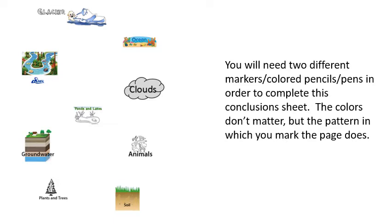In order to summarize the information presented and make it neater and cleaner, you're going to need two different colored pencils, markers, or pens. The colors don't matter so much, but the pattern in which you mark the pages does. As I go through the presentation using different colors for different pathways, you need to follow the same pattern. I'm using orange and purple because they contrast, but at the end you need a key that tells you what the different colors represent.